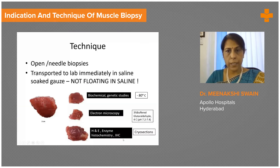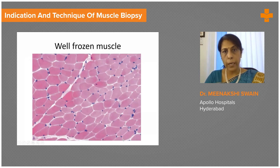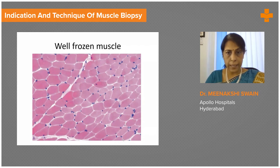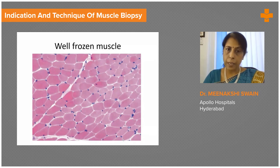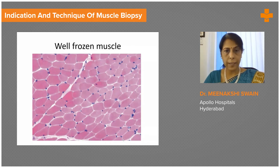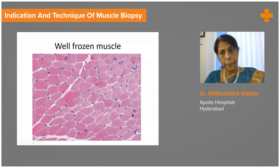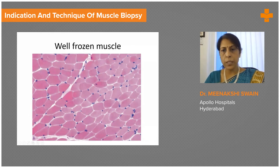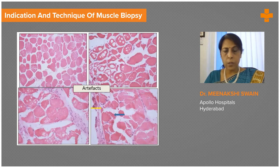Cryosections are cut and stored in pre-cooled foil. Sections not used immediately for special stains can be stored at minus 80 degrees Celsius until the stains are ready; the slides are then thawed to room temperature before staining. A well-frozen muscle shows uniform polygonal fibers arranged closely opposed to each other with subsarcolemmal nuclei. The sarcolemma is the plasma membrane of the muscle cell, with the nuclei just beneath it. An ideally frozen muscle shows minimal inflammation and no significant fibrosis or adipose tissue.